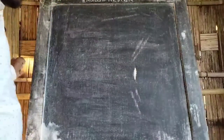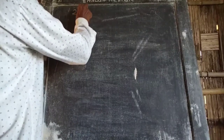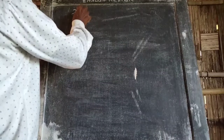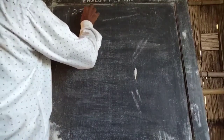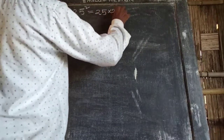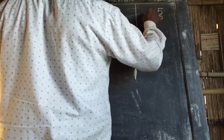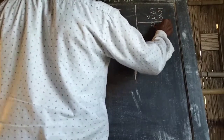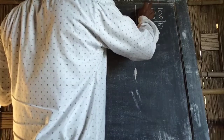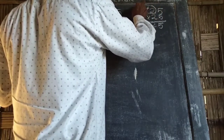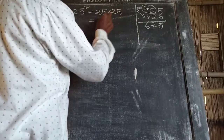We find the square of 25. We multiply 25 into 25 directly. Then we add: 10 plus 1 is 11, and 2 plus 1 is 3. Multiplying 3 into 2 is 6. So 25 into 25 is 625.